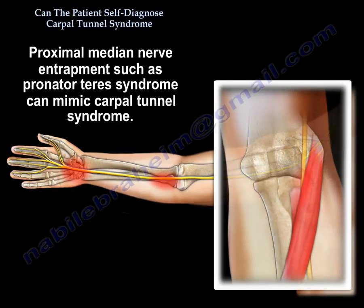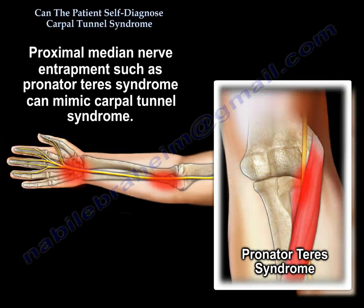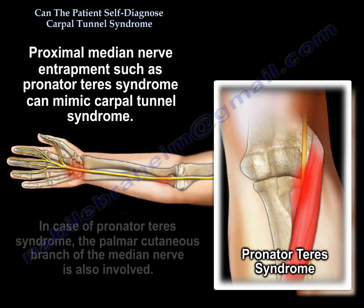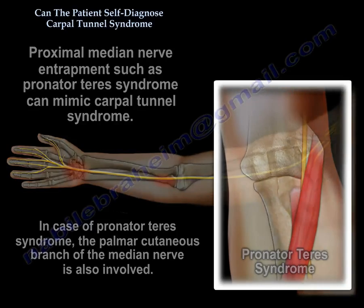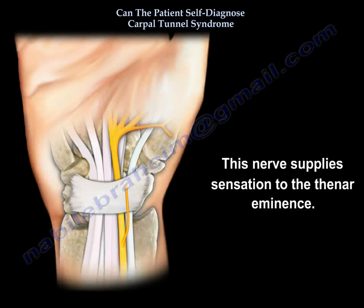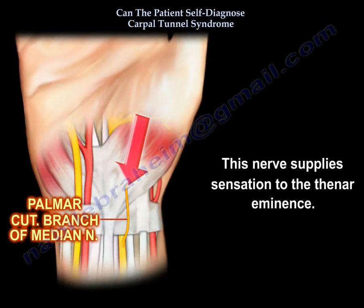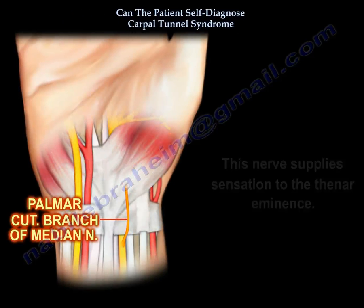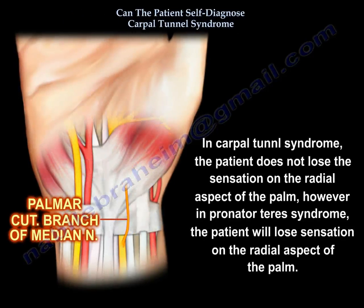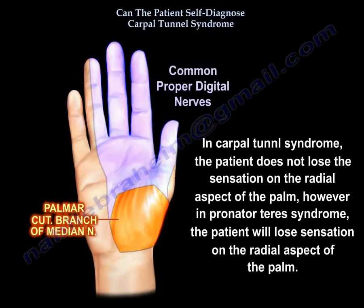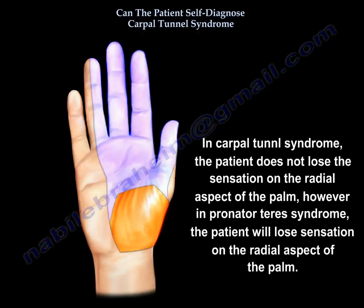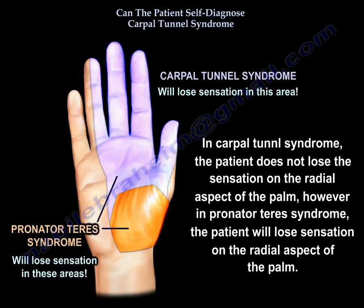Proximal median nerve entrapment, such as pronator teres syndrome, may also mimic Carpal Tunnel Syndrome. In pronator teres syndrome, the palmar cutaneous branch of the median nerve is also involved, supplying sensation to the thenar eminence. In Carpal Tunnel Syndrome, the patient does not lose sensation on the radial aspect of the palm; however, a patient with pronator teres syndrome will lose that sensation.